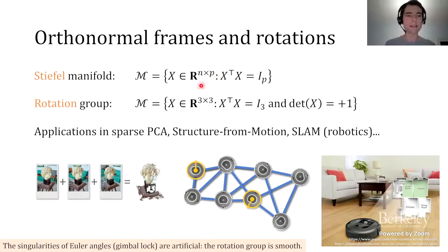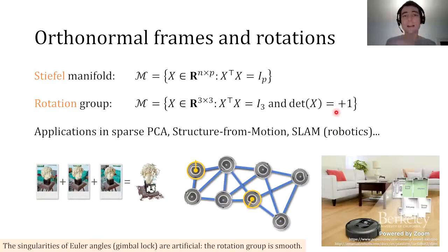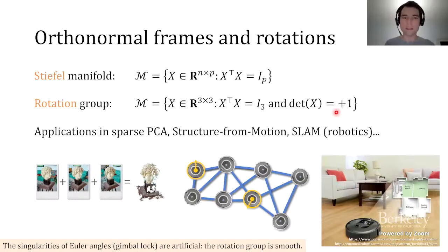If you set P equal to N, then this is the orthogonal group—the set of orthogonal matrices of size N by N, which has two disconnected components: orthogonal matrices with determinant plus 1, and those with determinant negative 1. If you keep only the ones with determinant plus 1, that's the rotation group, also called SO(N). In particular, if you consider the rotation group in R^3—the set of 3 by 3 orthogonal matrices with determinant plus 1—each matrix corresponds exactly and uniquely to one rotation in R^3. You can imagine how this comes up in computer vision, imaging, and other situations.